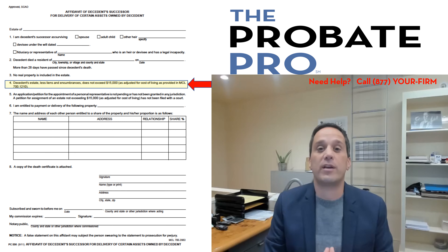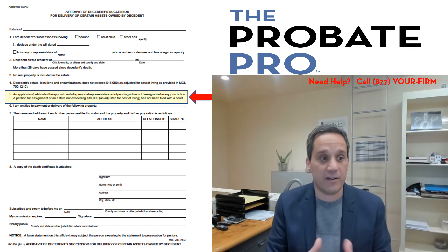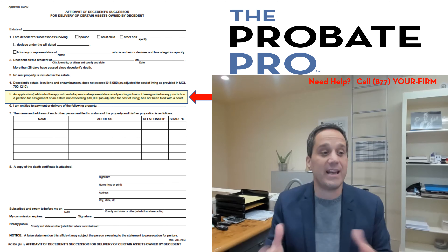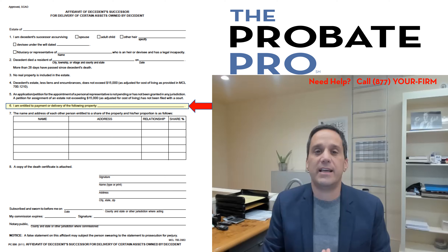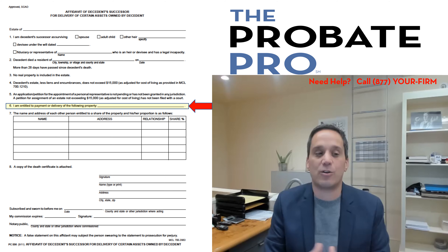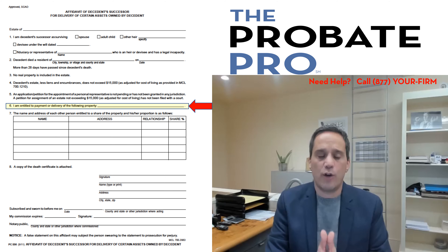Another requirement is that there is no pending probate involved — not pending or granted in any other jurisdiction — nor has a petition for an assignment, which is a short form of probate, been filed or utilized. The next is the assertion of the amount of money, the request that you're asking for — the payment or the delivery.